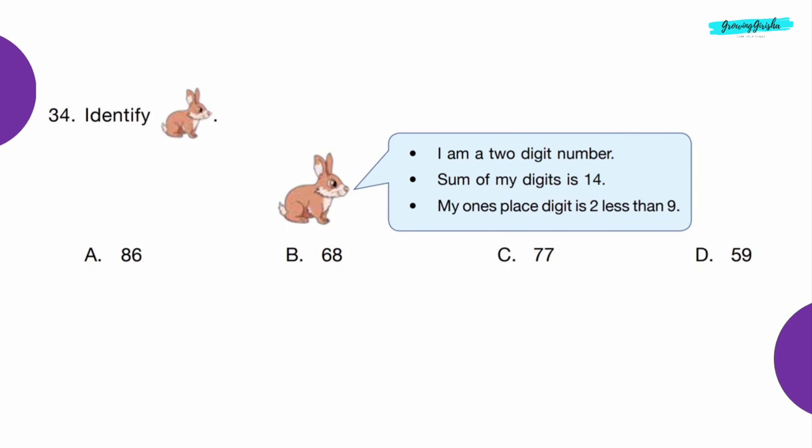Question 34: Identify the number the rabbit is talking about. I am a two-digit number. Sum of my digits is 14. My ones-place digit is 2 less than 9. Option C — 77.